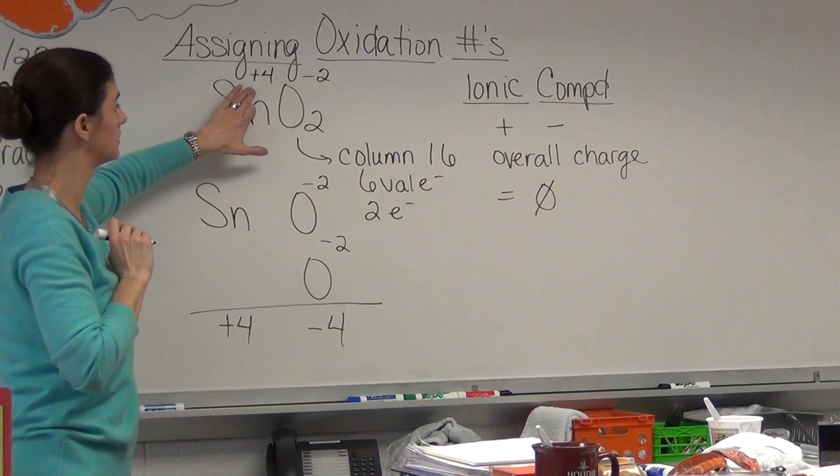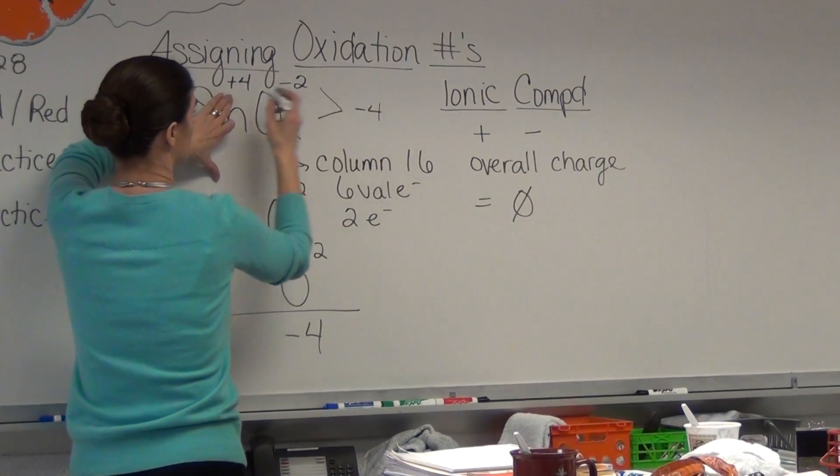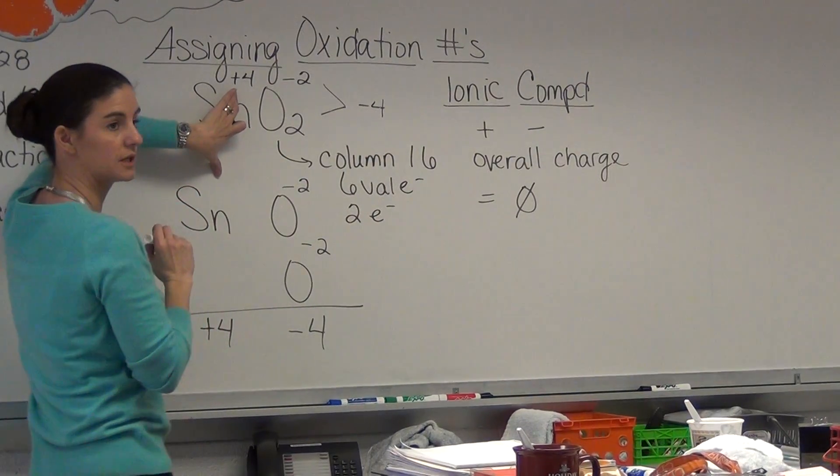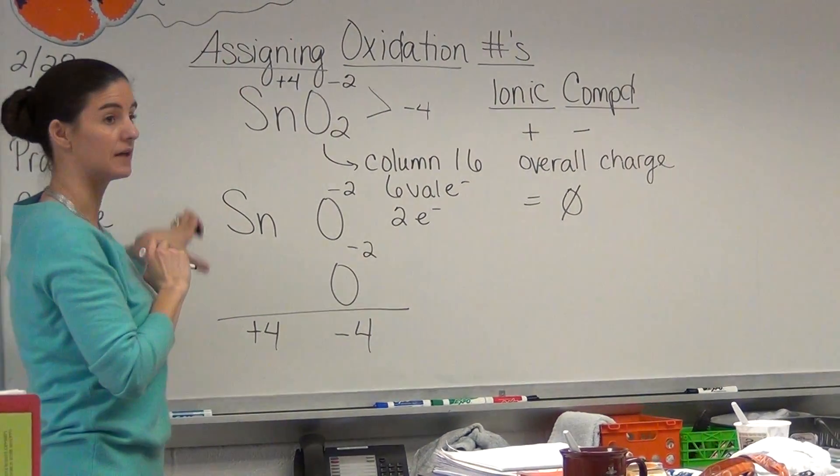So we have a plus four, we have a total minus four. Plus four minus four is going to give us our zero. That's how we assign the oxidation numbers.